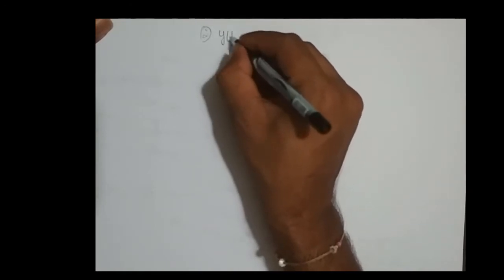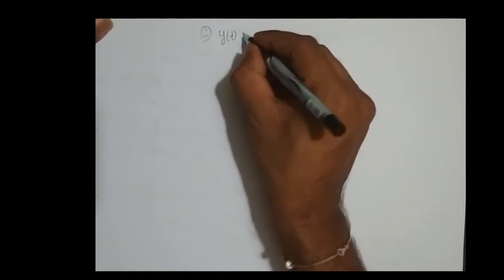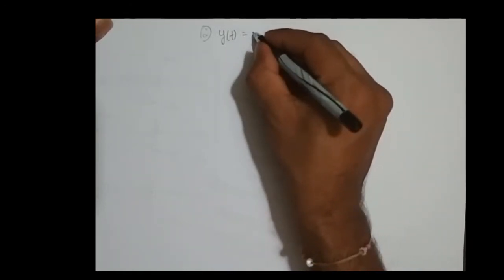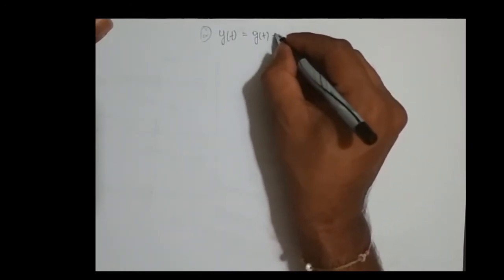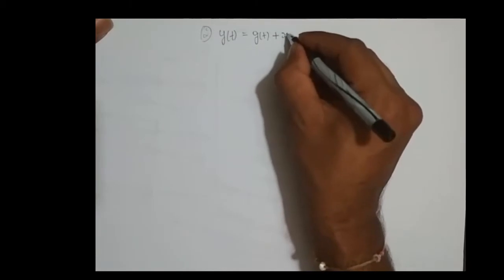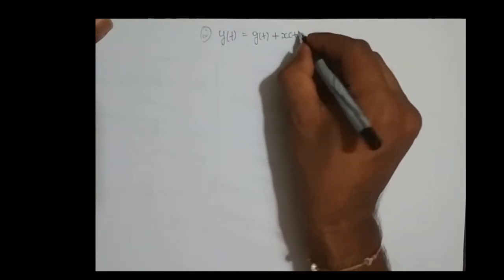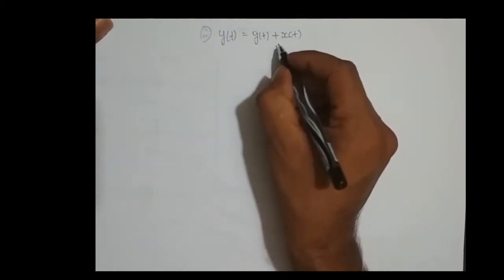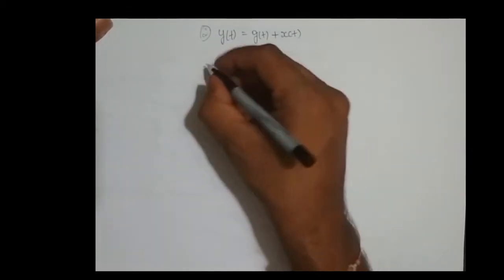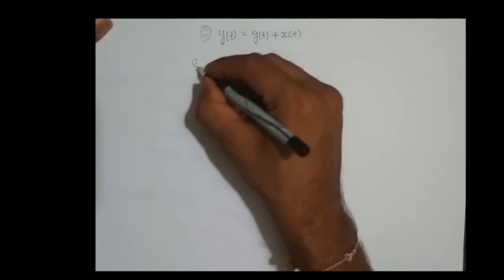So, y of t is equal to g of t plus x of t. This is the system equation.